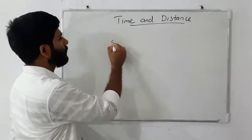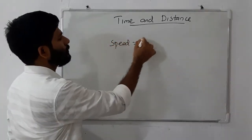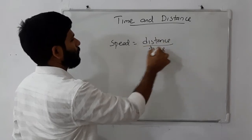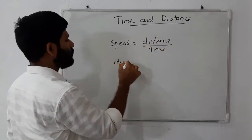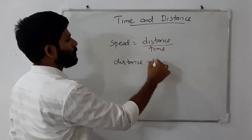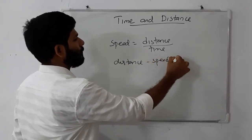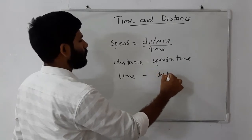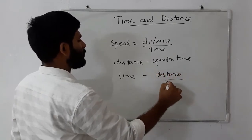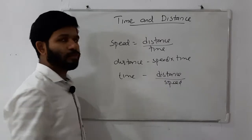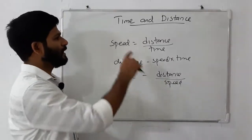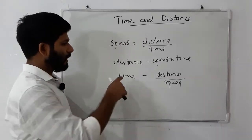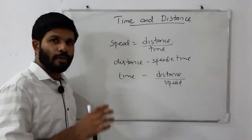The equation is that Speed is equal to Distance divided by Time. Distance is equal to Speed multiplied by Time. Time is equal to Distance divided by Speed. These are the three equations.